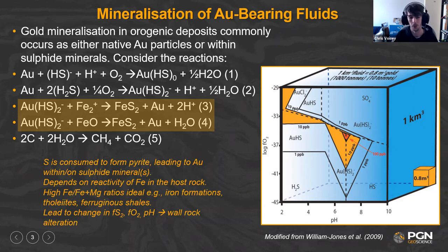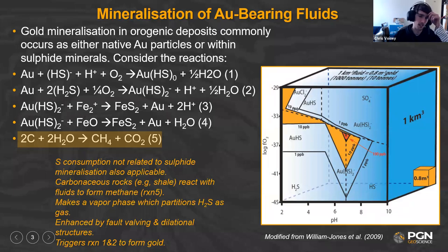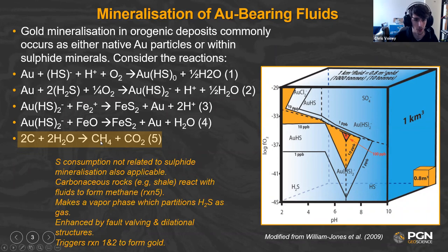Changing the fluid chemistry leads to wall rock alteration — you'll change the pH, sulfidation state, and oxygen fugacity. There are other ways to change what sulfur does that aren't necessarily related to making a sulfide mineral. For example, reacting with carbon makes a methane phase: water in a fluid can react with graphite in a shale bed and make methane. Good studies have shown that methane makes a vapor phase that then sequesters H₂S. So by reacting with graphite, you could drive reactions to strip H₂S away from gold, yielding native gold in a vein.